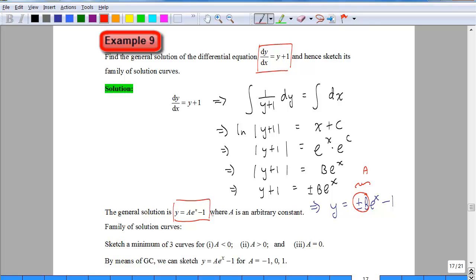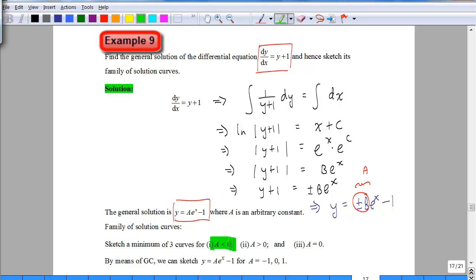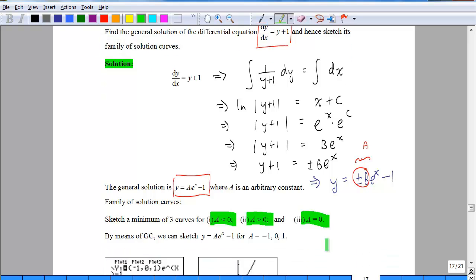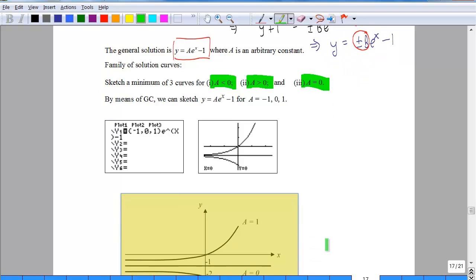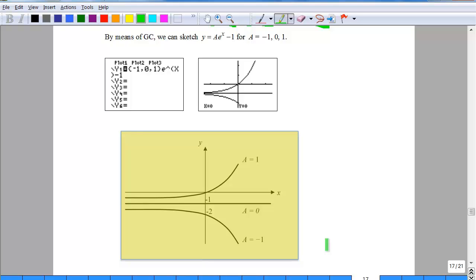For the family of solution curves, like we said before in example 9, you need to sketch a minimum of 3 curves. The 3 set of values is for a < 0, a > 0, and a = 0. For the sketches of these different values of a, we use the GC to sketch. If you don't want to use the GC for an exponential graph like this, it's quite easy to sketch it manually. For these 3 different values, we are able to sketch the 3 graphs that depict the family of solution curves for this particular solution of the differential equation.